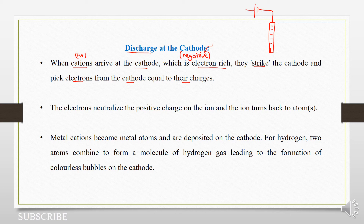we shall find that when a cation comes and strikes this cathode, it is going to lose its charge because it will pick an electron from it.